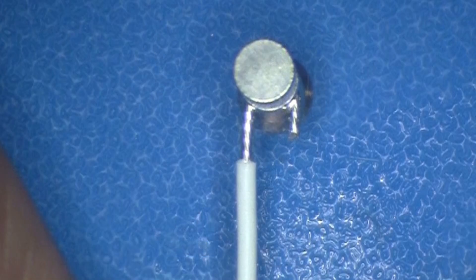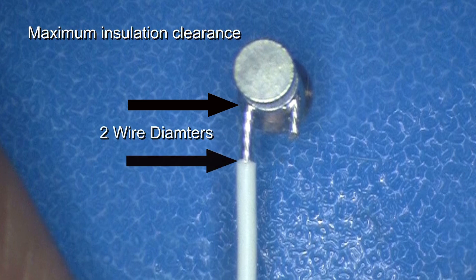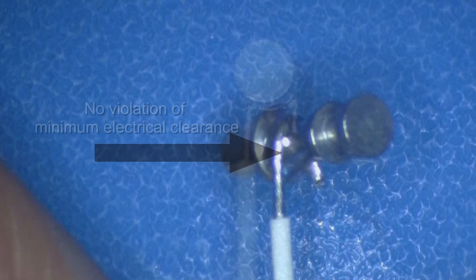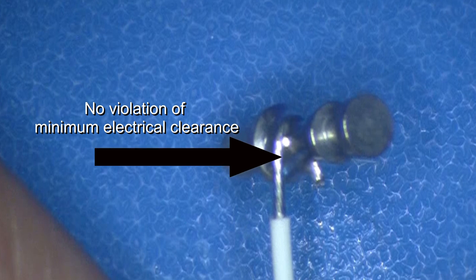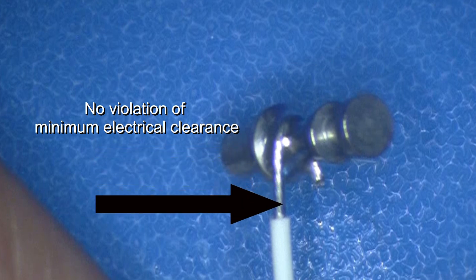On a Class 3 assembly, the insulation can extend to and even touch the solder connection as long as it does not interfere with the required soldered connection. As a maximum, the insulation can't be more than two wire diameters from the connection, and the exposed wire cannot cause a potential short to other objects on the assembly. The short is called a violation of minimum electrical clearance.